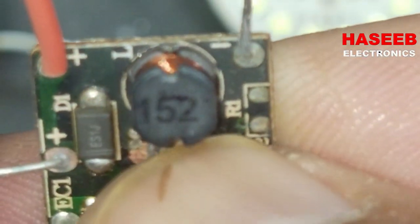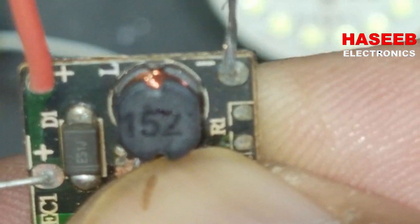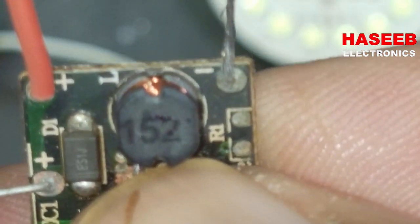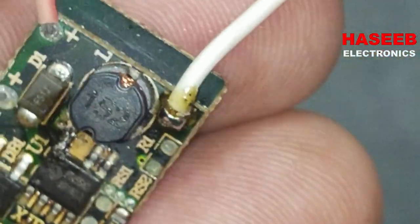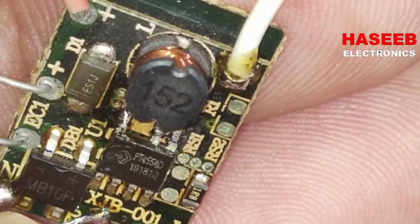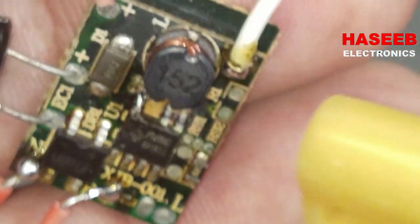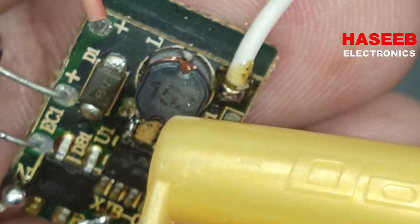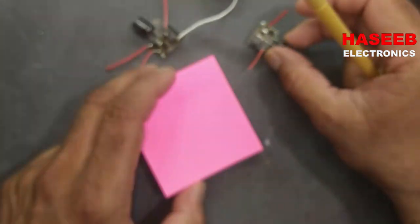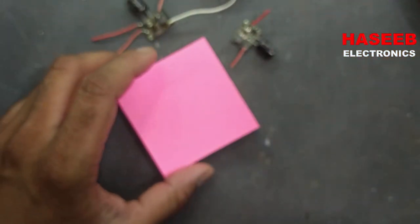If we see this inductor, here is code 152. Here is also 152. How can we say it is 1.5 millihenry? Any inductor in the circuit, in any circuit...